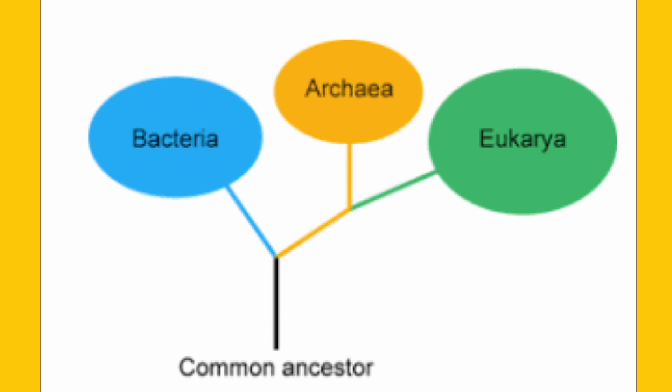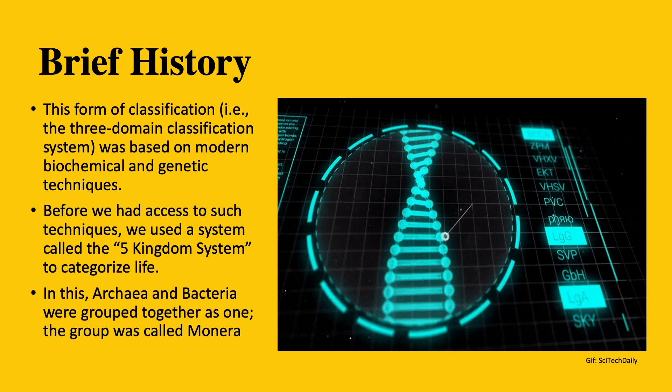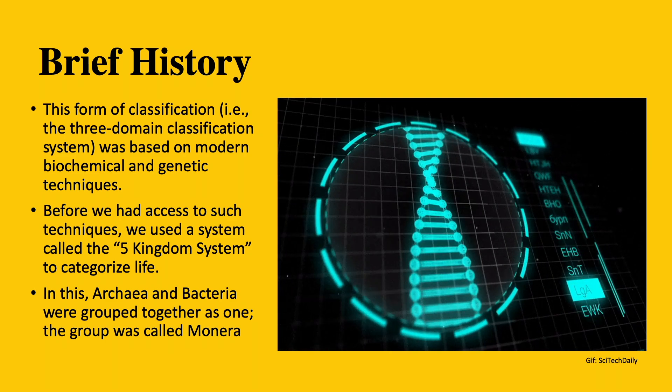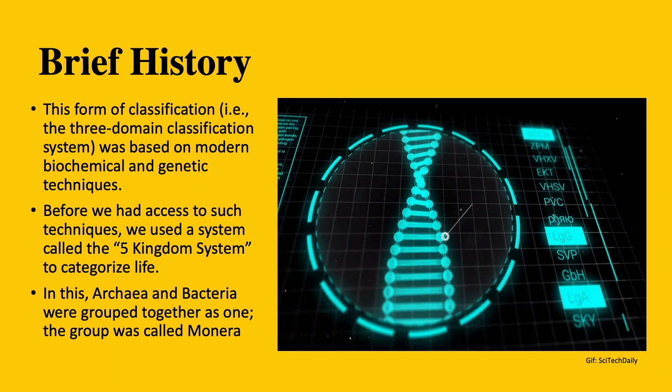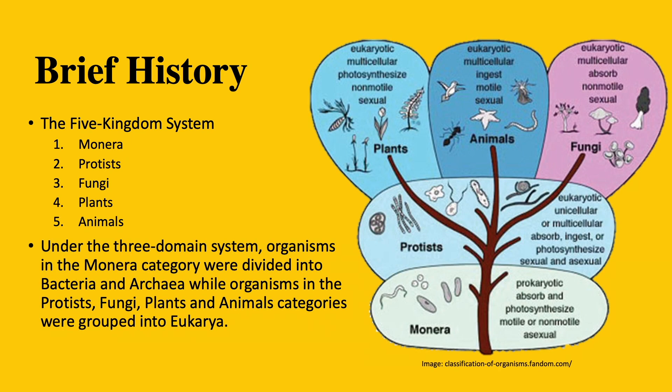Therefore, Archaea and Eukarya have their own common ancestor as well. Interestingly, what we call prokaryotes refers to all the organisms found in the Archaea and Bacteria domains. This form of classification was based on modern biochemical and genetic technologies. Earlier, we used a system called the Five Kingdoms system to categorize life. In this, Archaea and Bacteria were grouped together, and the group was called Monera.